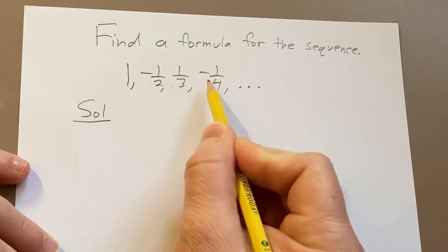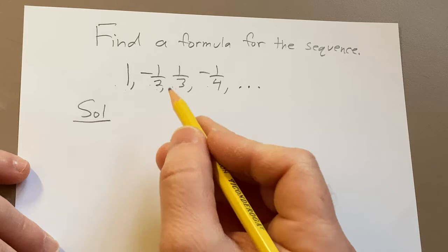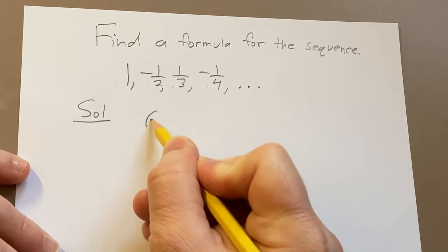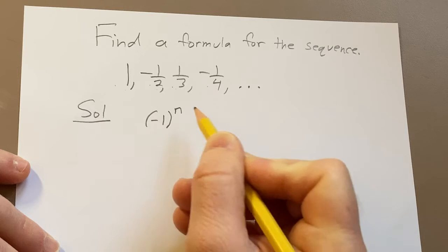So we have positive, negative, positive, negative. So generally when you have signs that are alternating, you want to think of negative one to a power.